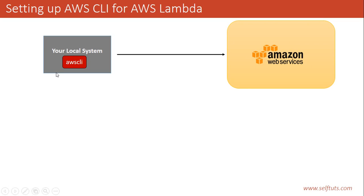When you are creating small functions or learning AWS Lambda, it is easy to use Amazon Web Services via the web console, as we have done in previous videos. But as the project grows and the number of Lambda functions increases, it becomes very tedious to manage all of them through the web console. So there is a need for AWS CLI where you can write your own scripts to upload, edit, or delete a Lambda function. Setting up AWS CLI for AWS Lambda is a multi-step process.